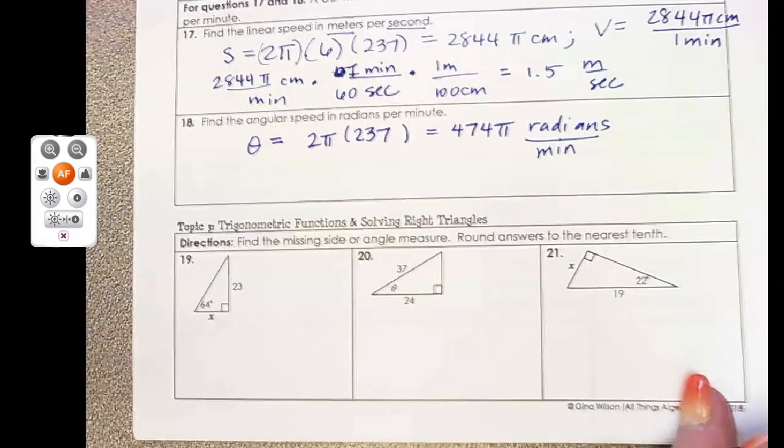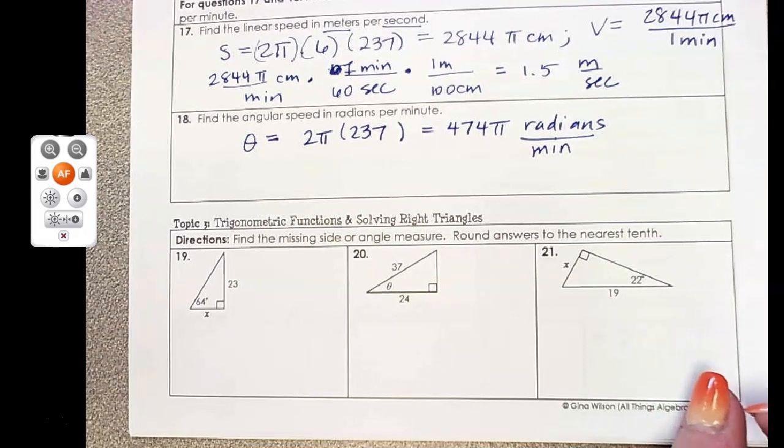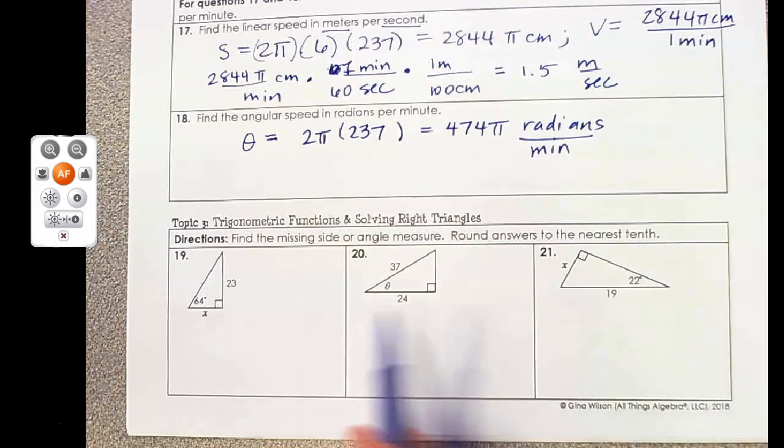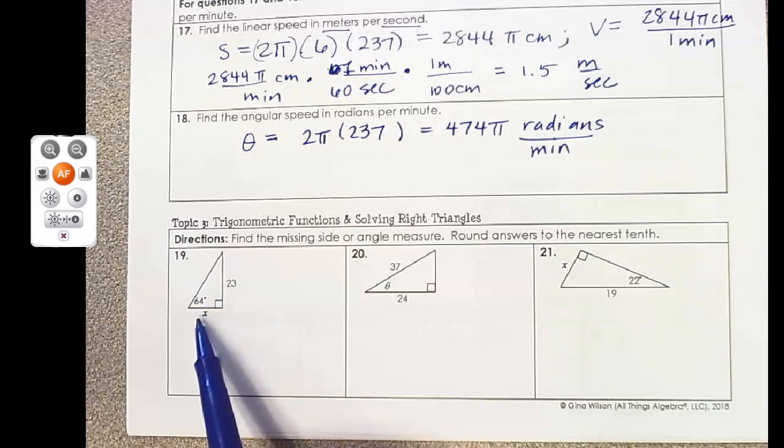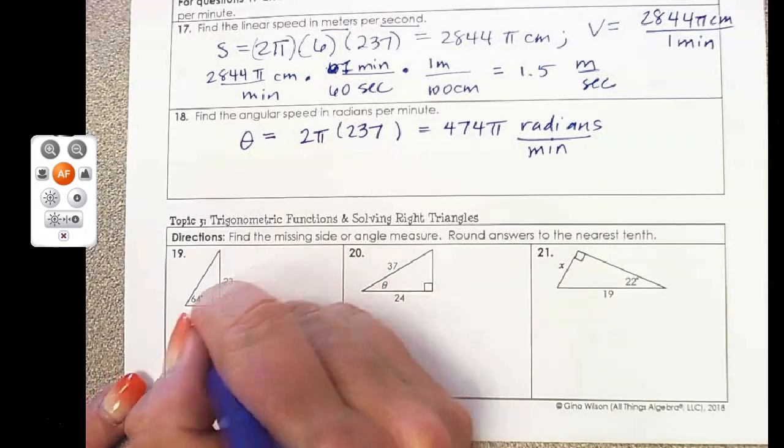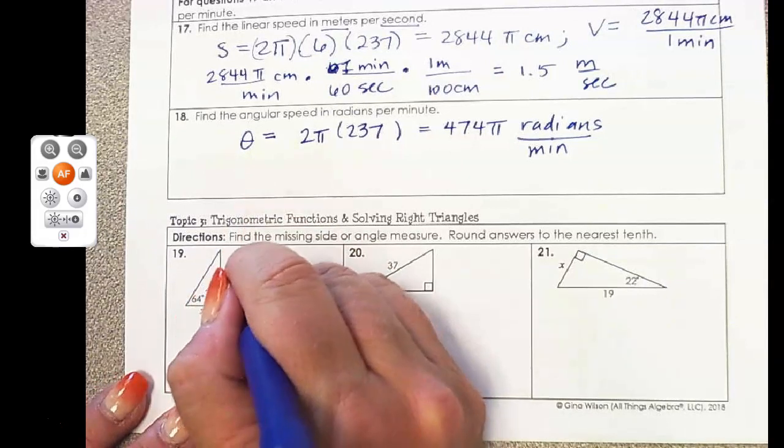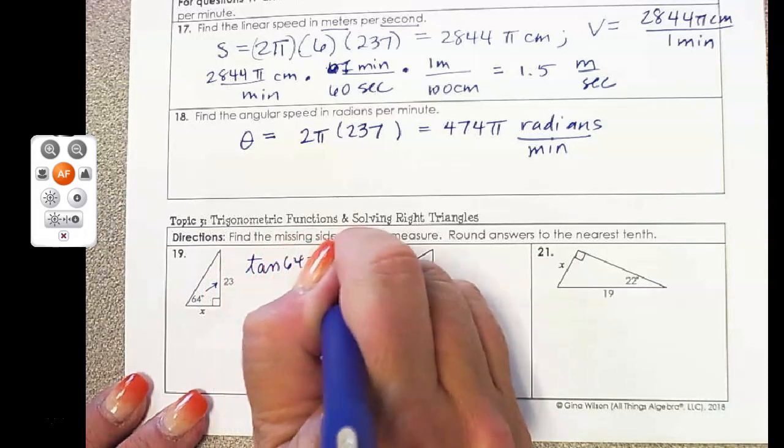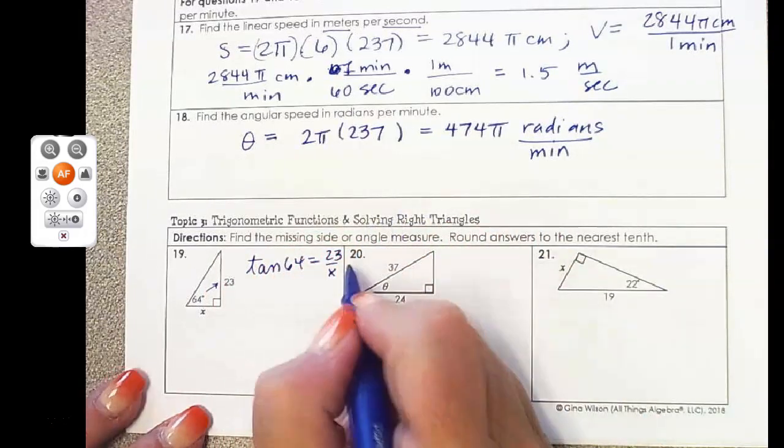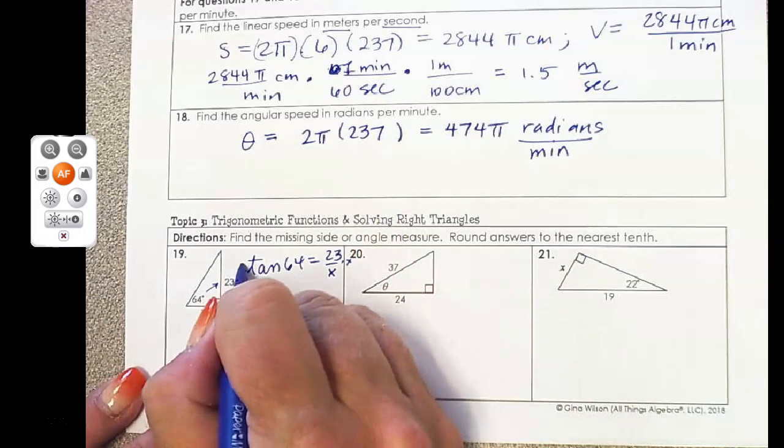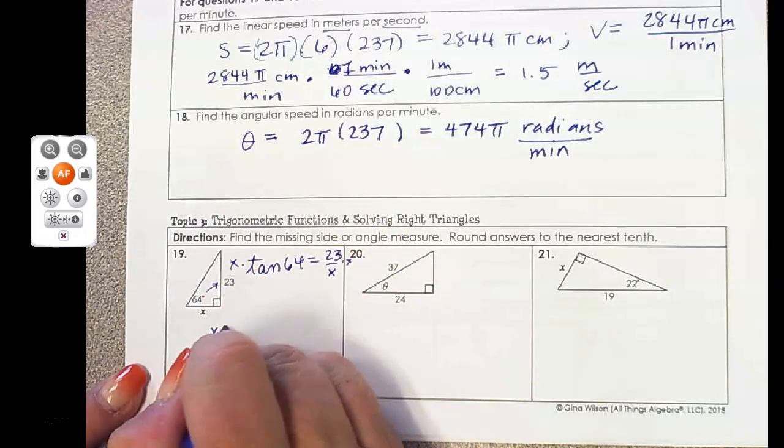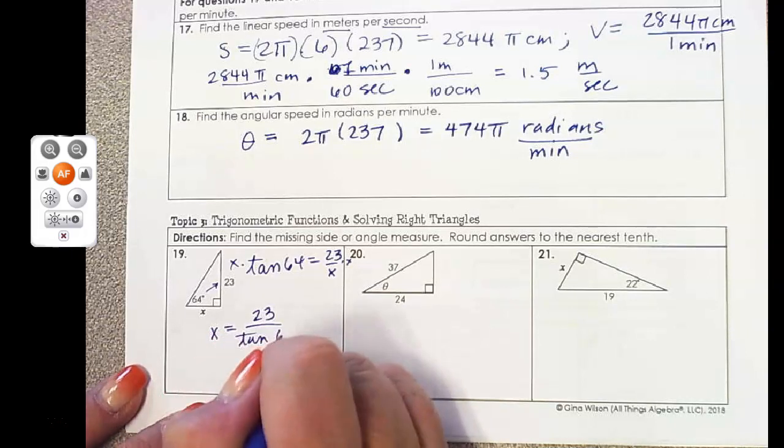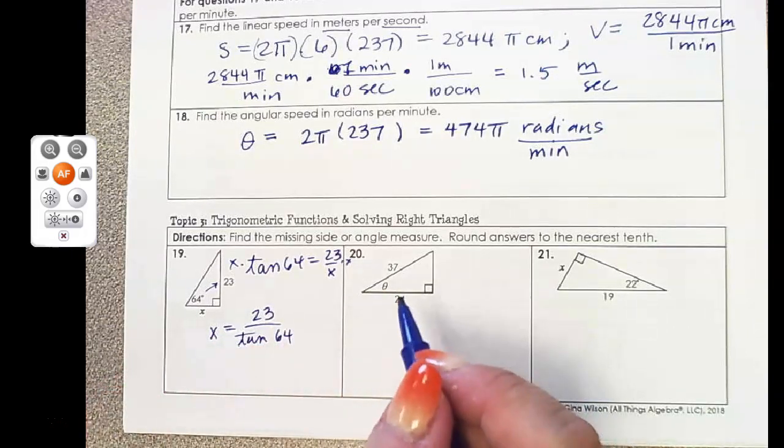All right, so next topic is solving right triangles. We're going to set up a ratio and solve for x. So in number 19, I see that I have an opposite and I want the adjacent. And that's the 64 degrees, the angle. So I'm going to set up tangent of 64 is 23 over x. And then I have to multiply by x on each side, divide by the tangent. So I get x equals 23 divided by tangent of 64, which just works out to 11.2.